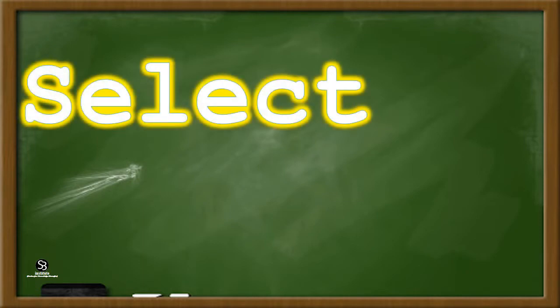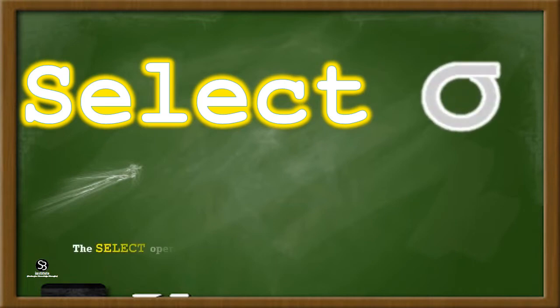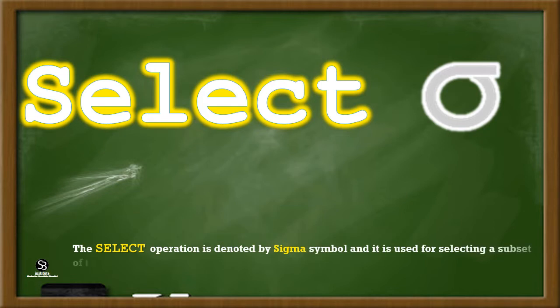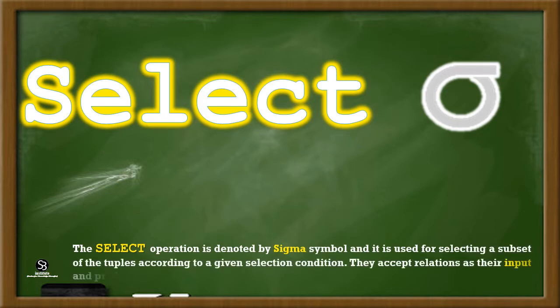Selection. The Select operation is denoted by the Sigma symbol and it is used for selecting a subset of the tuples according to a given selection condition. They accept relations as their input and produce relations as their output.